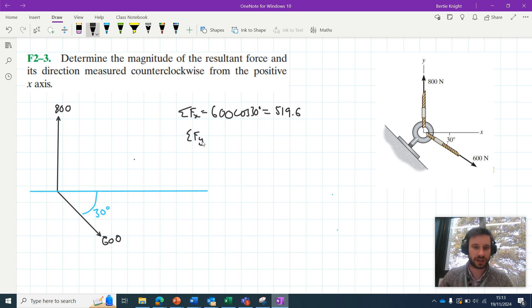Let's move on and resolve vertically. We can say the sum of the forces in the y—we've got this 800N force, and then we've got the vertical component of that 600N force, which will be minus 600 sin 30°. And when we plug this into our calculator, we find it's equal to 500.